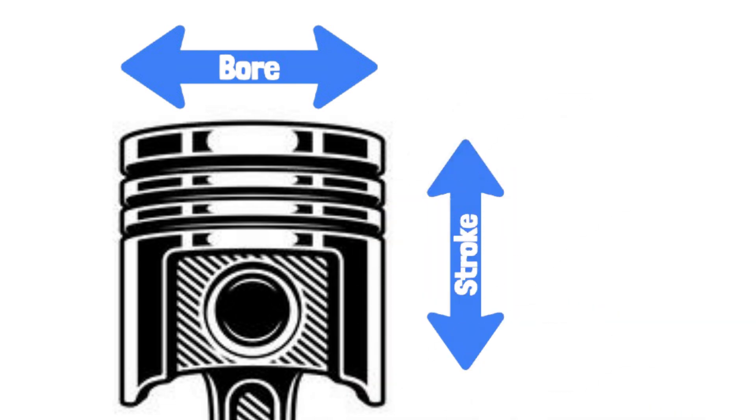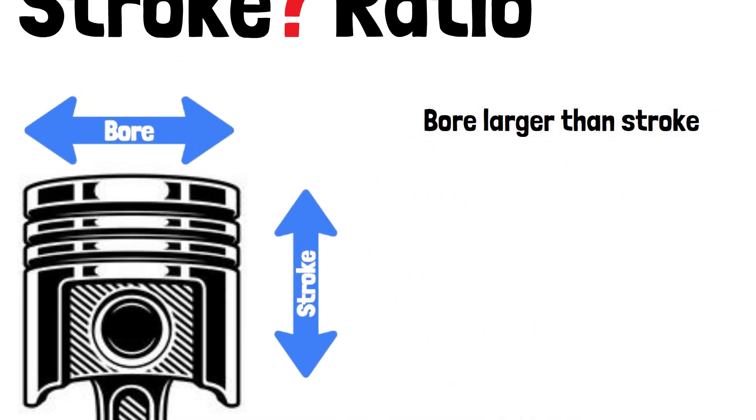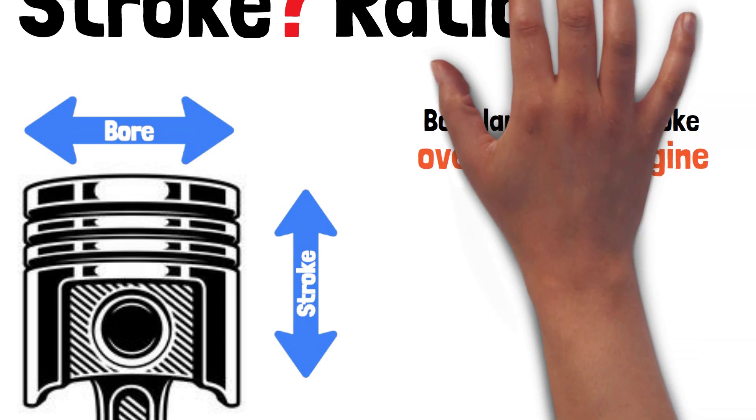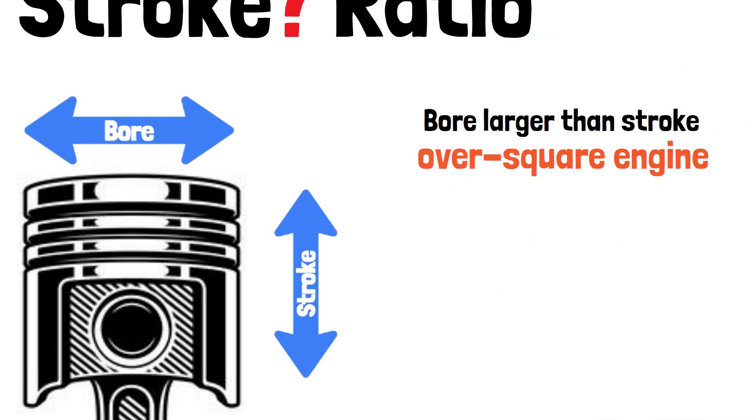The bore-stroke ratio is simply the relationship between these two measurements. When the bore is larger than the stroke, we call it an over-square engine. But if the stroke is longer than the bore, it's known as an under-square engine.